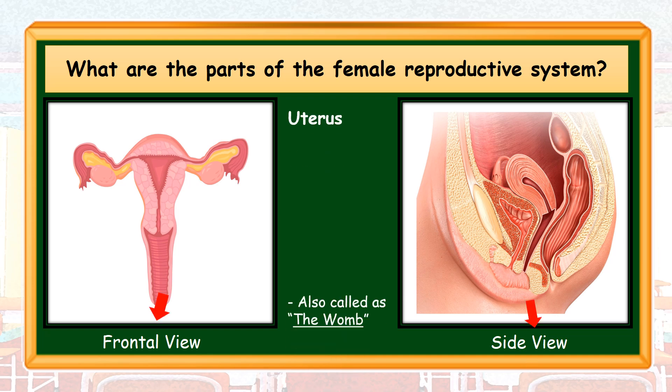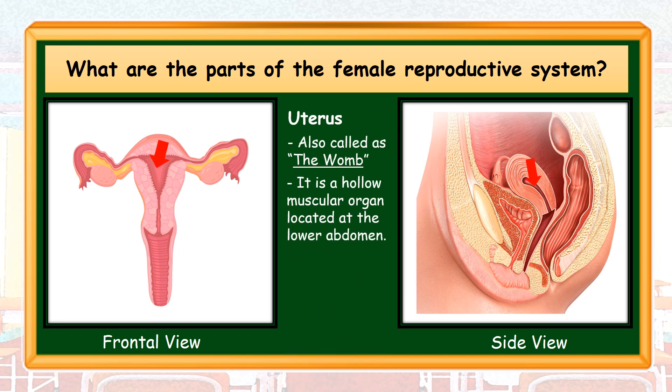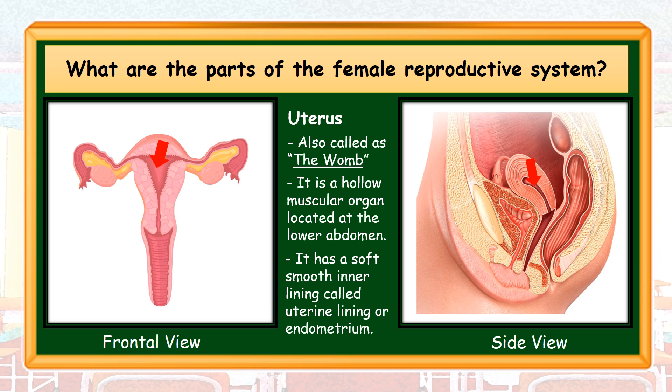Uterus, also called the womb. It is a hollow muscular organ located at the lower abdomen. It has a soft inner lining called uterine lining or endometrium. This lining gives blood and nutrients to the fetus as it grows for nine months. The uterus is also the implantation site for the fertilized egg. If the egg is not fertilized, the uterine lining together with the egg cell will break and becomes red discharge during menstruation.